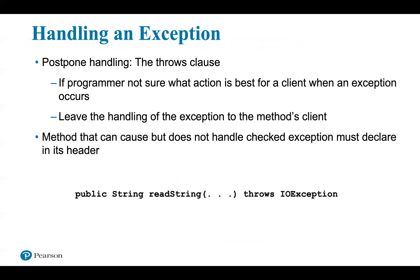Let's talk about handling an exception. When a checked exception might occur, it must be handled somewhere. For a method that might cause a checked exception, you have two choices: handle the exception within the method, or postpone handling it by telling the method's client to do so. Imagine a method that returns a string it reads from disk — something might go wrong while reading, generating an IOException. Since IOException is a checked exception, it must be handled. We could handle it within the method's body.